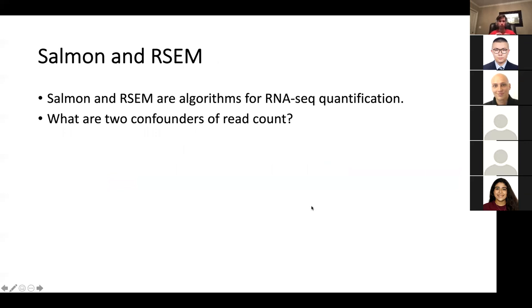I want to quickly show you guys how to use Salmon and RSEM. These are both algorithms for RNA-seq quantification, which means you want to measure the level of gene expression in your samples. For those of you who were in lecture today, what are two potential confounders of read count if you're just looking at the raw count? For example, in my sample 50 reads aligned to this gene. What are two potential problems with using that as a measure for gene expression?